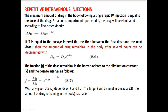In the third equation, we calculate the fraction of the dose remaining in the body. The formula is: F = DB / D0 = e^(−k·lambda). With any given dose, the fraction F depends on k, the elimination rate constant, and lambda, the dosage interval.